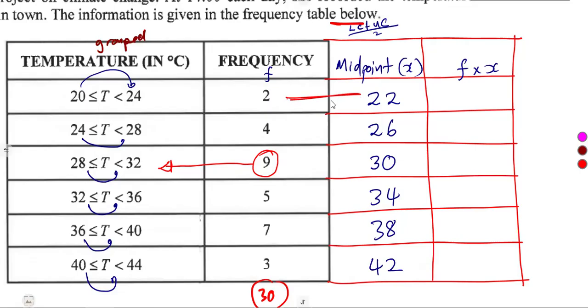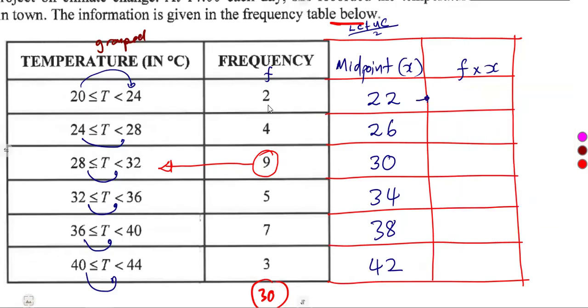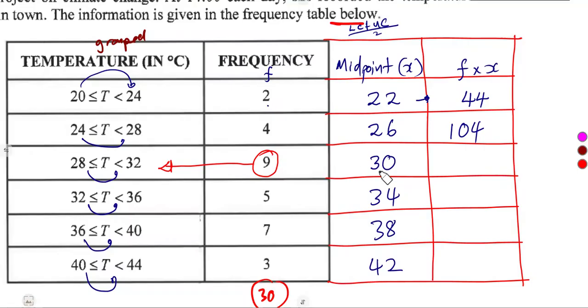The product now, frequency to the midpoint, giving us the last column here. We're going to multiply 2 and 22. That's going to give us 44. So this was 44. 4 and 26, that's 104. Then we move on to 9 and 30, which is 270.